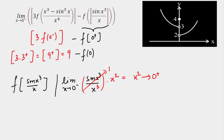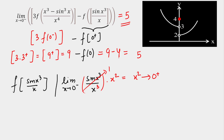So we need to subtract f(0) from 9. As seen from the graph, f(0) is exactly equal to 4. Therefore, the final answer is 9 - 4 = 5. So 5 is the value of the limit, and that will be our final answer.